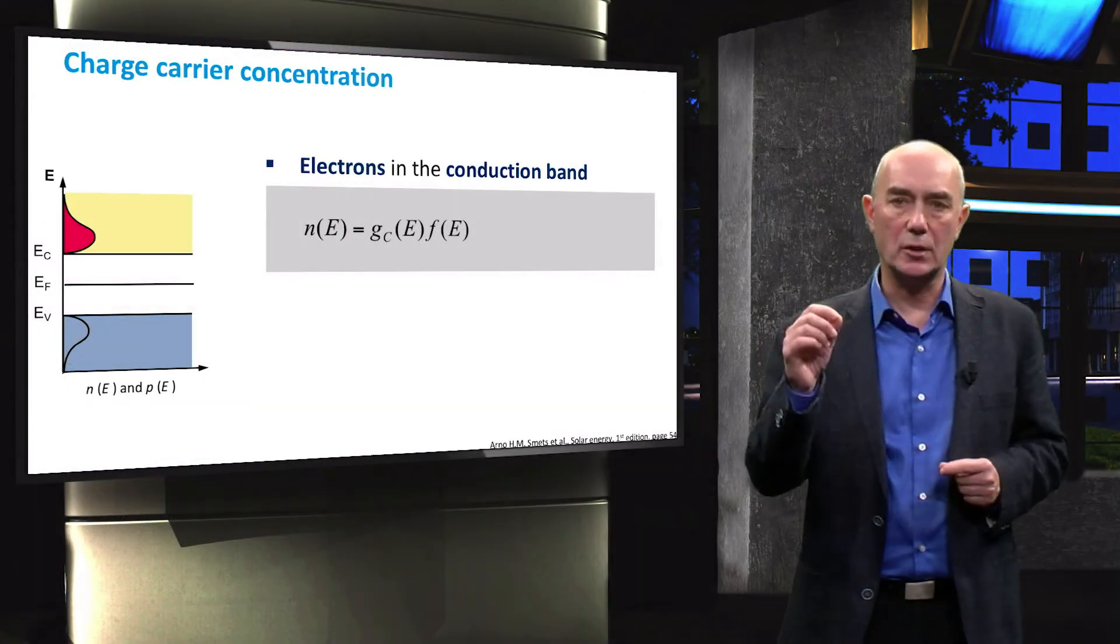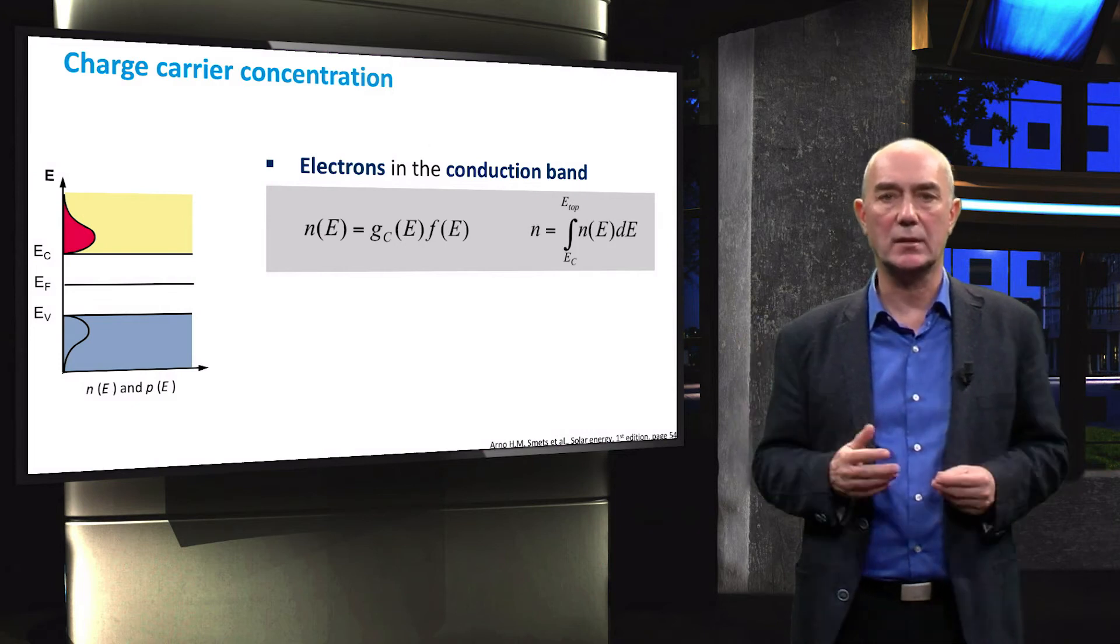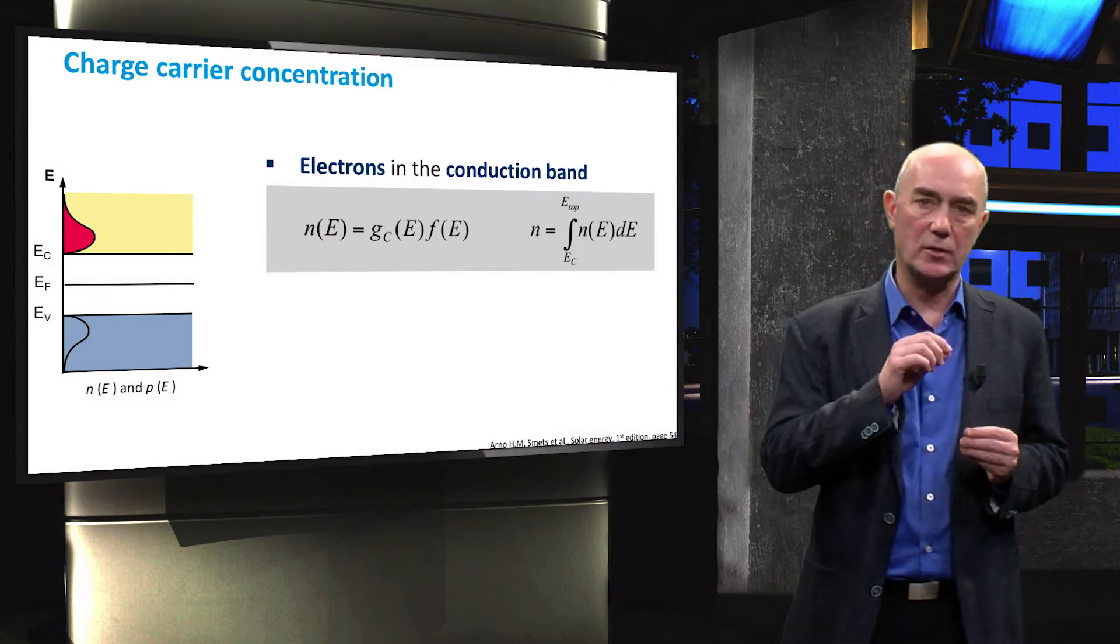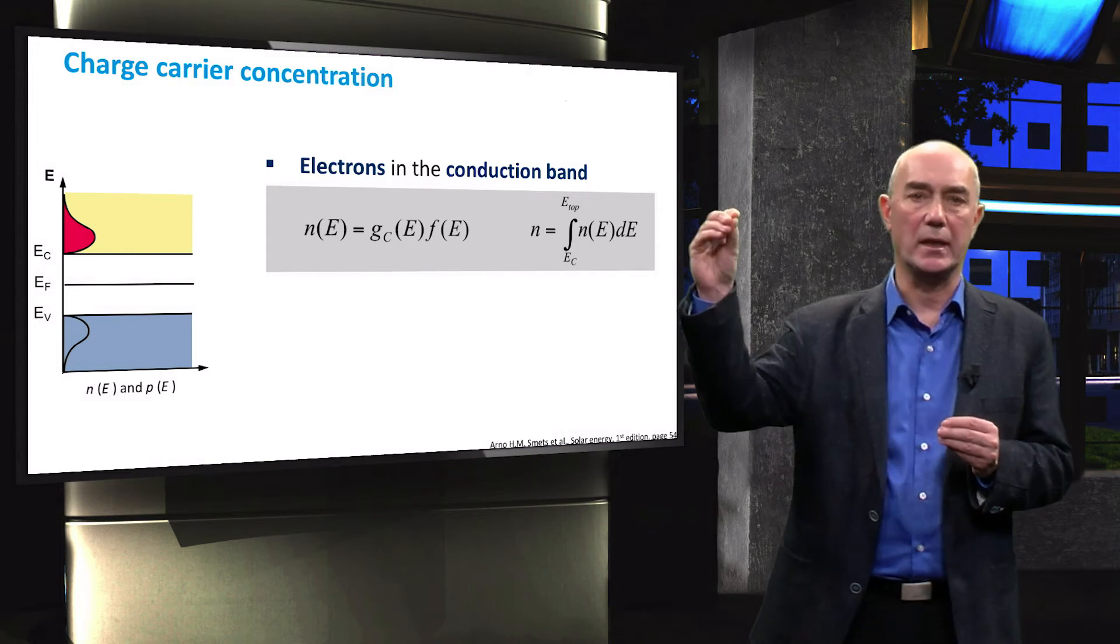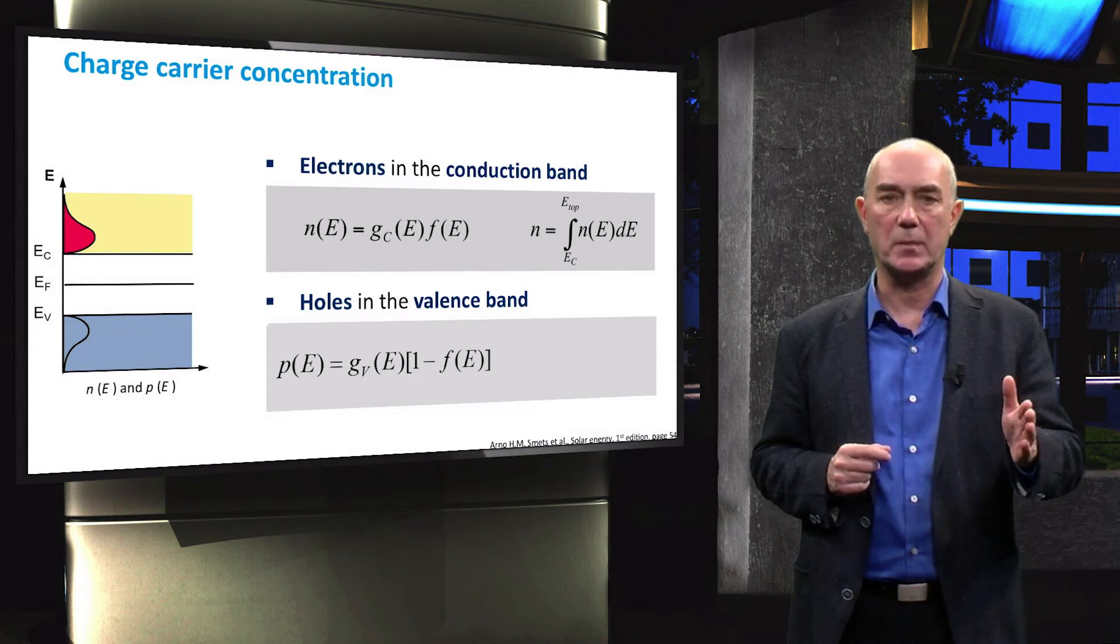If we want to know the total amount of mobile electrons, we just have to integrate this product from the conduction band edge throughout the band. A similar equation is used for the number of holes in the valence band.